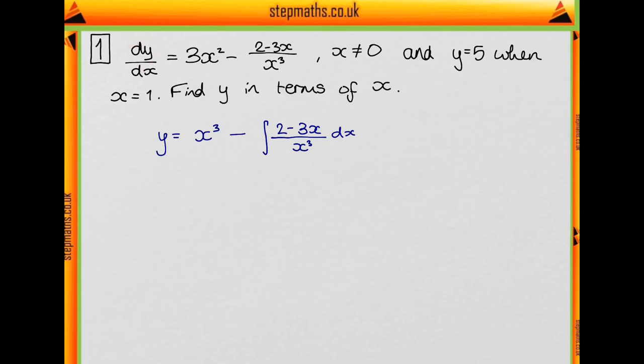We integrate the left hand side to get y. So we have y equals 3x² integrates to x³ and then we minus the integral of this. So how are we going to integrate this? Well we can split this into two fractions because it's 2/x³ minus 3x/x³. So we do that now. 3x/x³ has x on the top and bottom so we cancel to get 3/x².